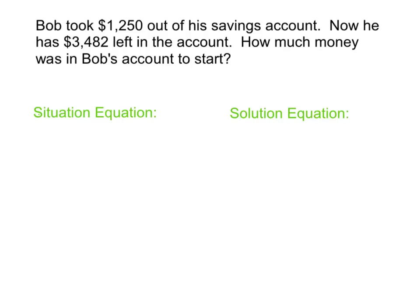I'm going to use a variable, an algebraic expression, n, to represent what he started with. Then he took out $1,250, and he was left with $3,482. And of course, what we want to solve for is n. So that's the situation that Bob finds himself in.